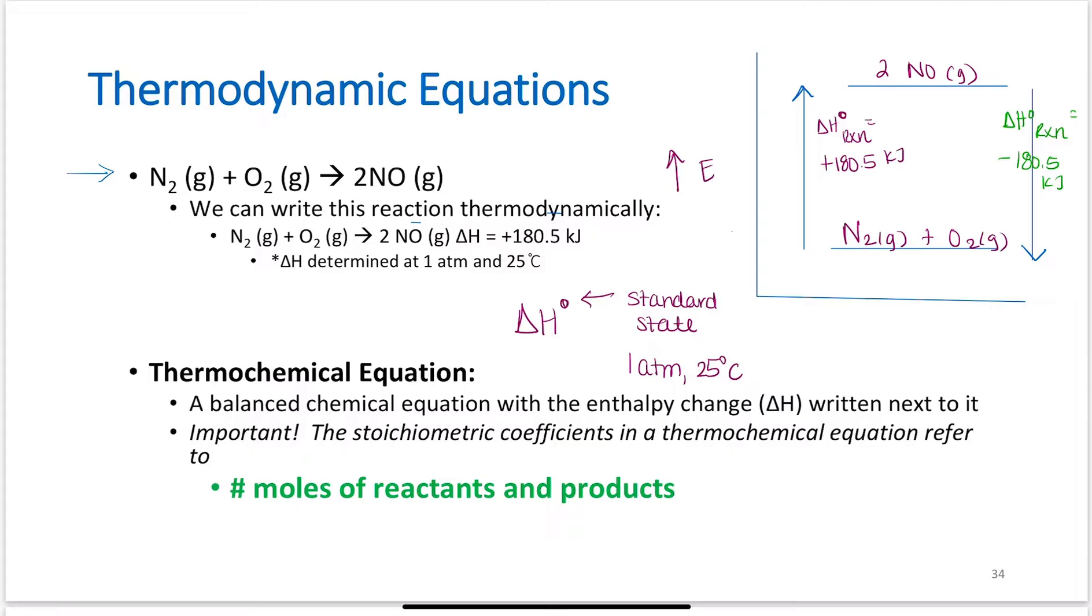So again, it takes 180.5 kilojoules for 1 mole of N2 to react with 1 mole of O2 to produce 2 moles of NO. 2 moles of NO can react to produce 1 mole of N2, 1 mole of O2, and it will release 180.5 kilojoules of energy to do so.